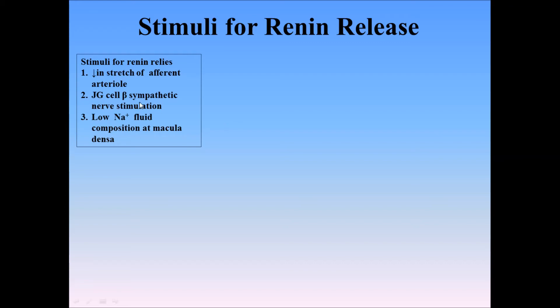The second cause is beta-adrenergic nerve stimulation — for instance, in stressful conditions, renin levels are higher than normal. The last cause is a low sodium concentration at the macula densa cells, which are located at the distal convoluted tubule.